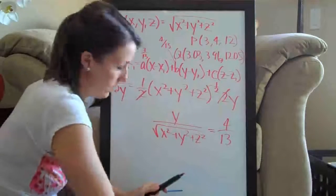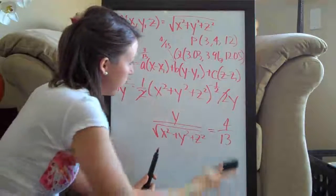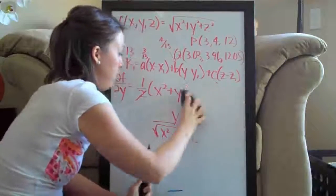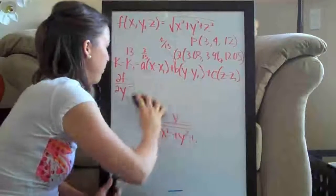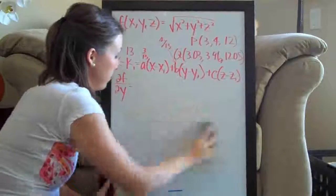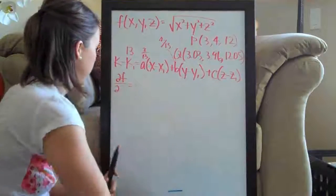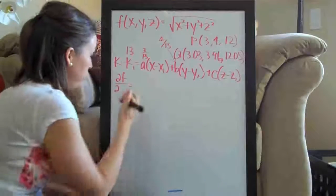So b is 4 over 13, and then we're going to find the partial derivative with respect to z.